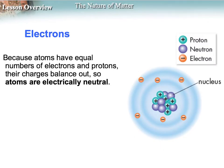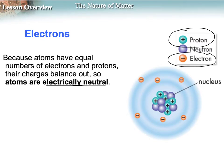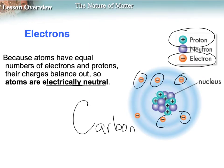An atom in its regular, normal state will always be electrically neutral because it has the same number of protons as electrons. So if we look here at a carbon atom, we've got six protons in the center and six electrons on the outside. The six positives and the six negatives balance each other out, so they're electrically neutral.